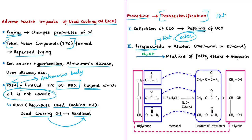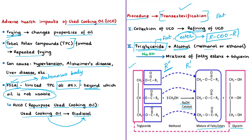Since triglycerides are the main constituents of fat in used cooking oil, they are treated with an alcohol such as methanol. Sodium hydroxide is used as a catalyst to speed up the reaction. The products of this reaction are mixed fatty esters and glycerin. This complete chemical process is known as transesterification — a process of exchanging the organic compound R'' of an ester with the organic compound R' of an alcohol, where R' of the alcohol is CH₃. The mixture of fatty esters is then purified to get biodiesel, and the byproduct glycerin is used in the cosmetic industry.